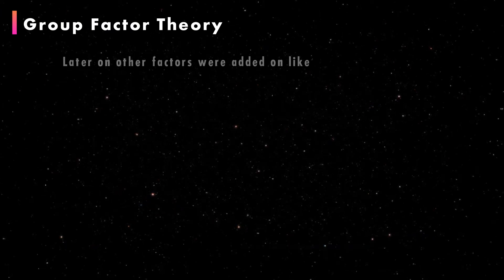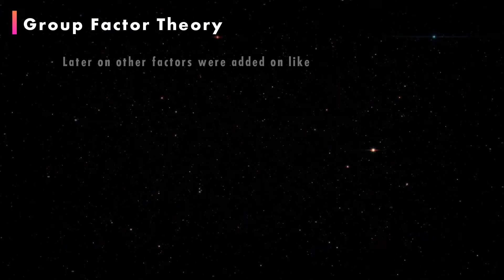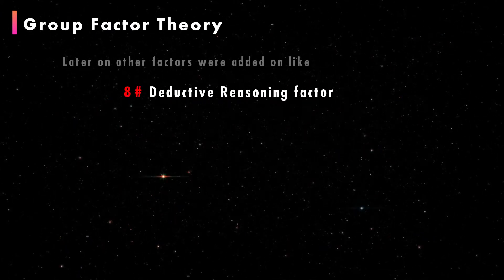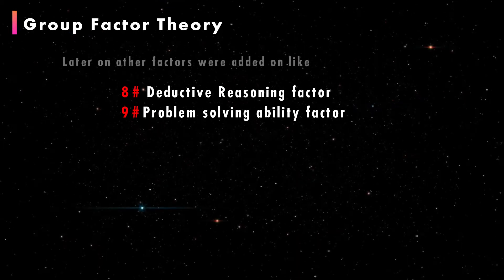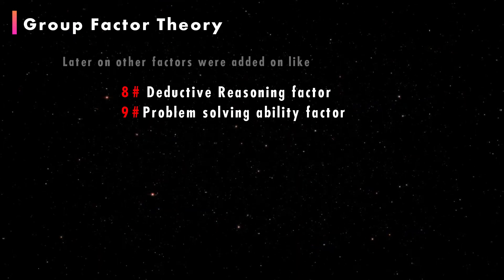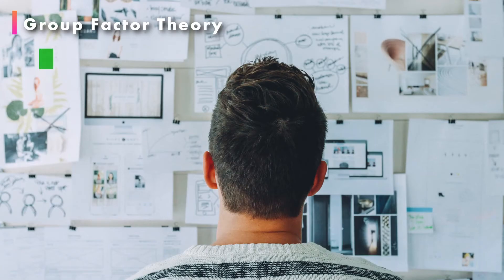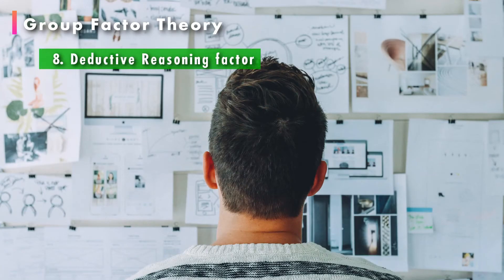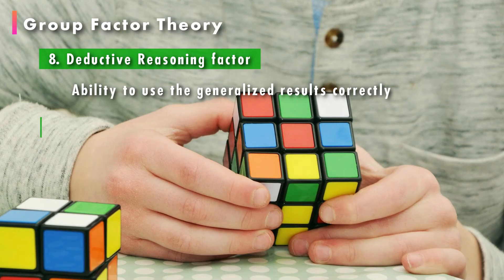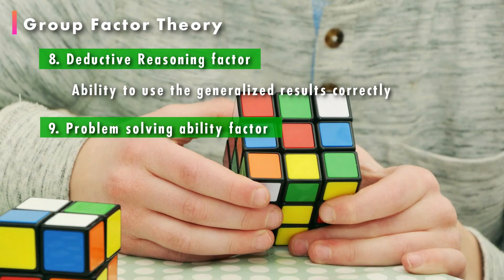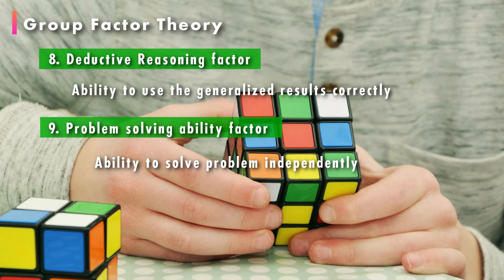Later on, Thurston added two more factors: deductive reasoning and problem solving ability. The deductive reasoning factor concerns the ability to make use of generalized results, and the problem solving ability factor concerns the ability to solve problems independently.